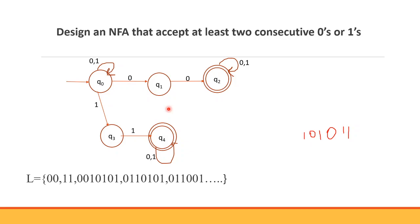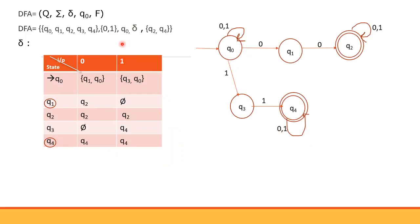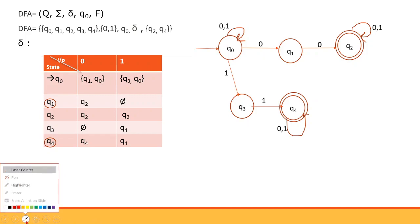If we look at the DFA equivalent, the number of states increases. Let's use a state-input table. We have states Q0, Q1, Q2, Q3, Q4, with input alphabet 0 and 1. The initial state is Q0. The final states are Q2 and Q4.